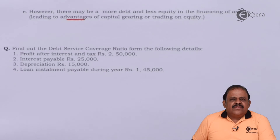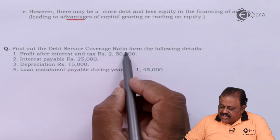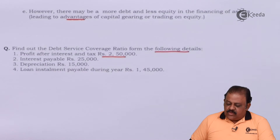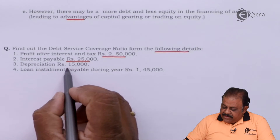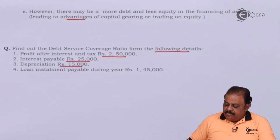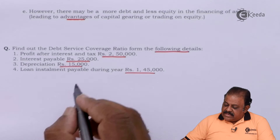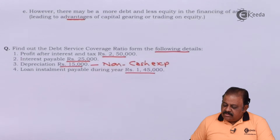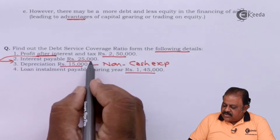Let us do one small example. Find out the debt service coverage ratio from the following details: profit after interest and tax — 2,50,000; interest payable — 25,000; depreciation — 15,000; loan installment payable during the year — 1,45,000. Depreciation is a non-cash expense, and profits are given after deducting interest of Rs. 25,000.